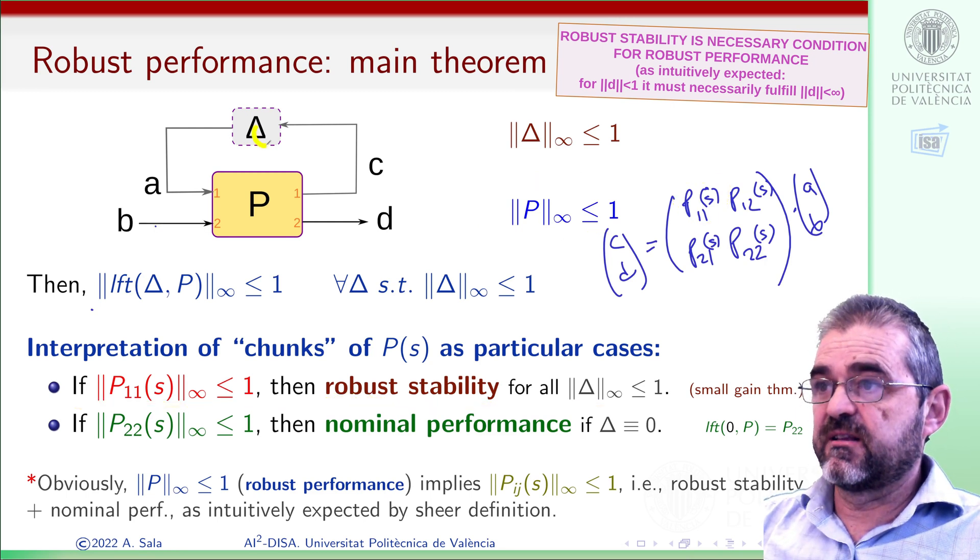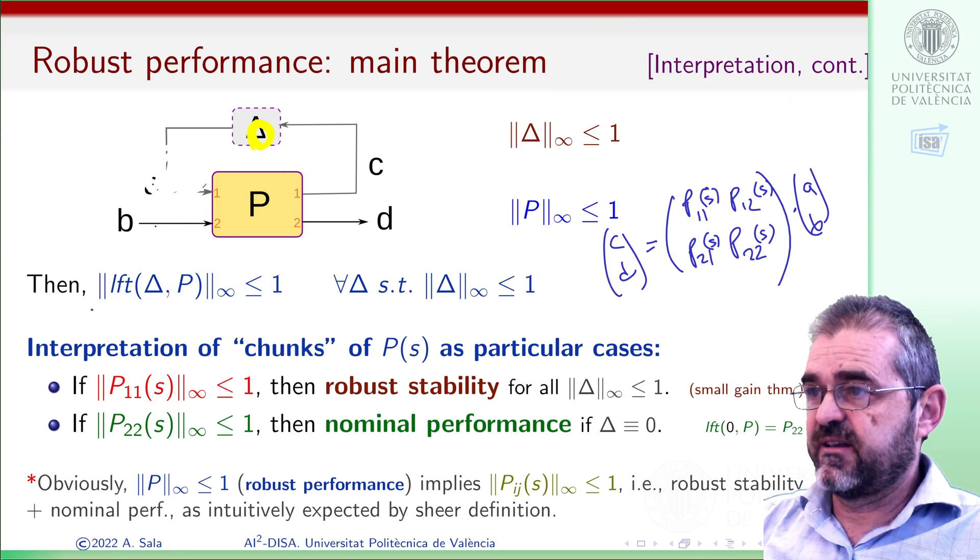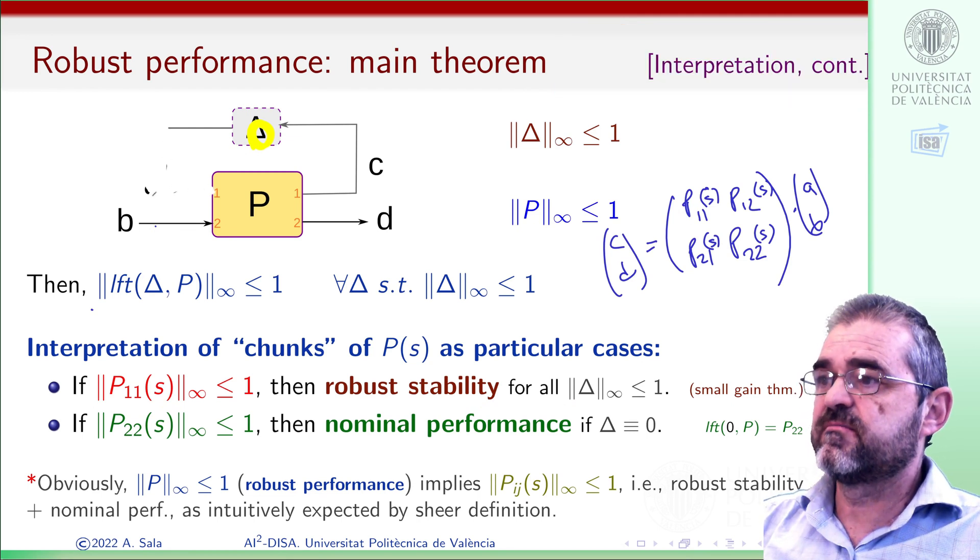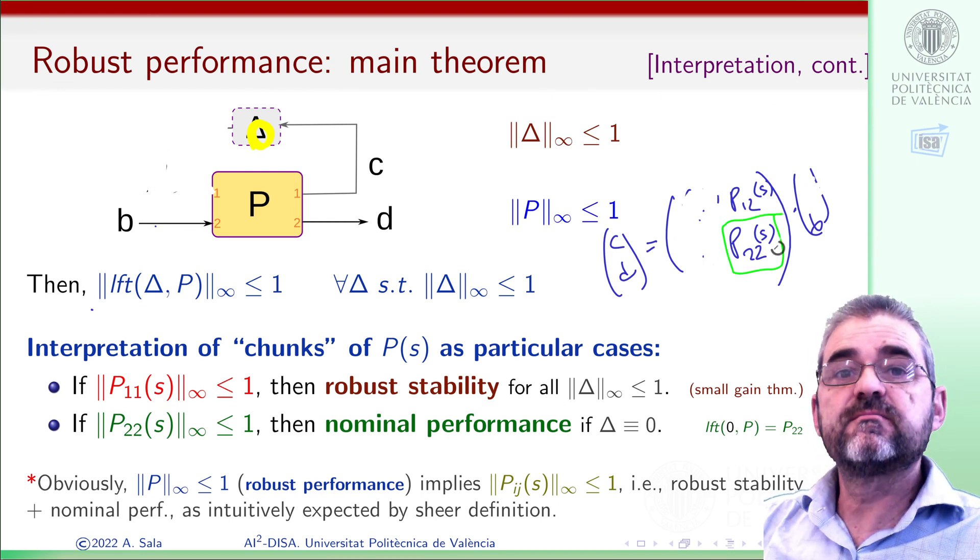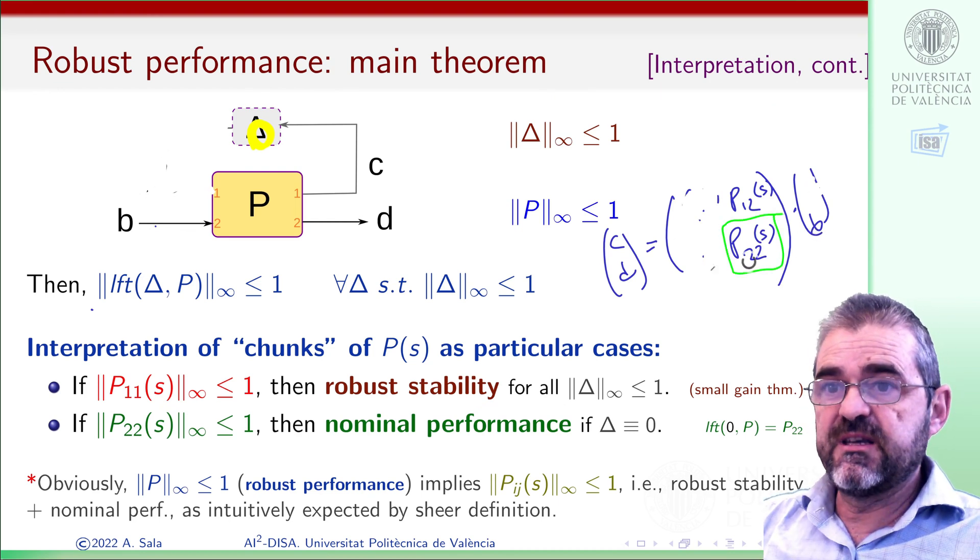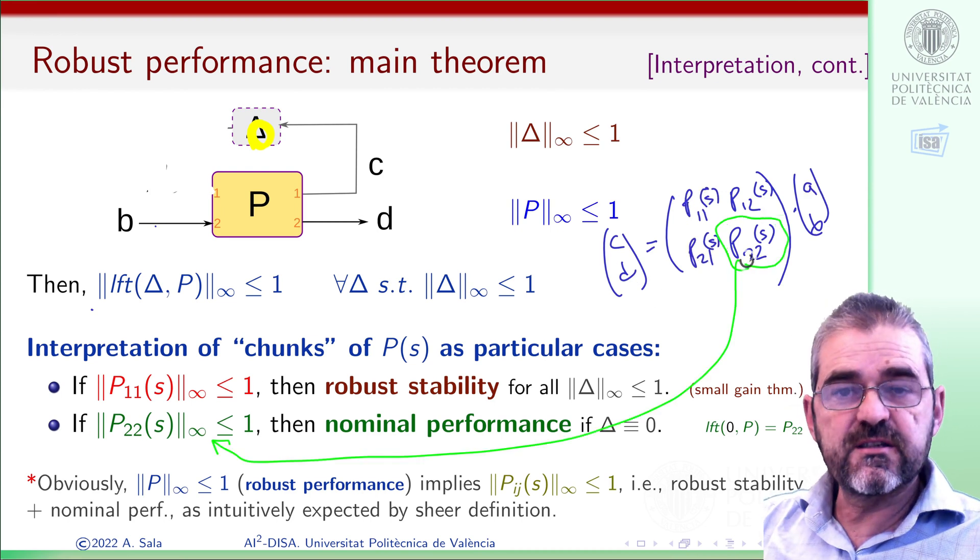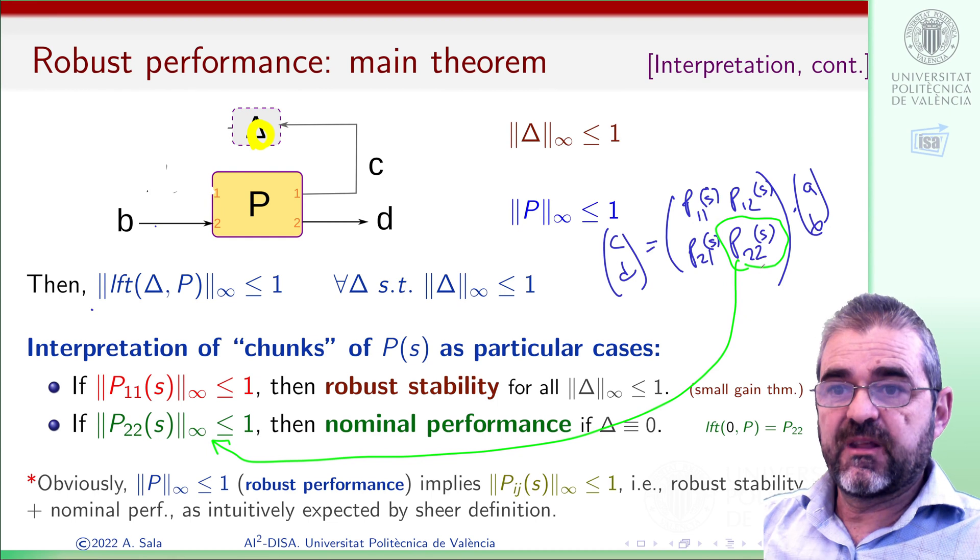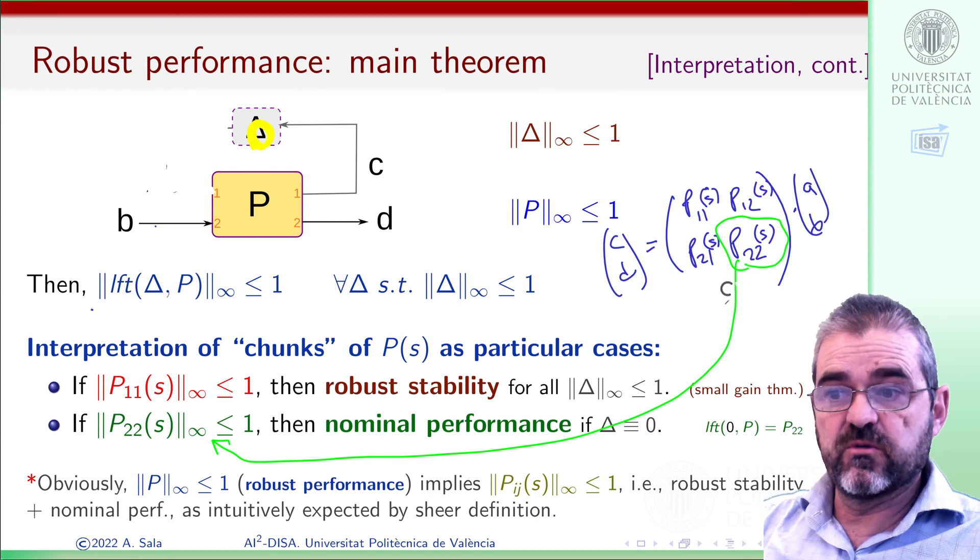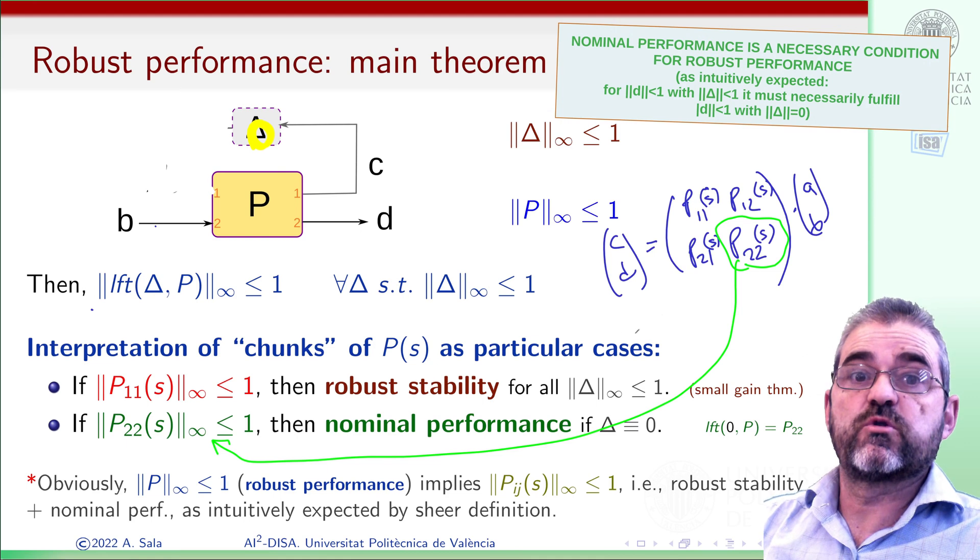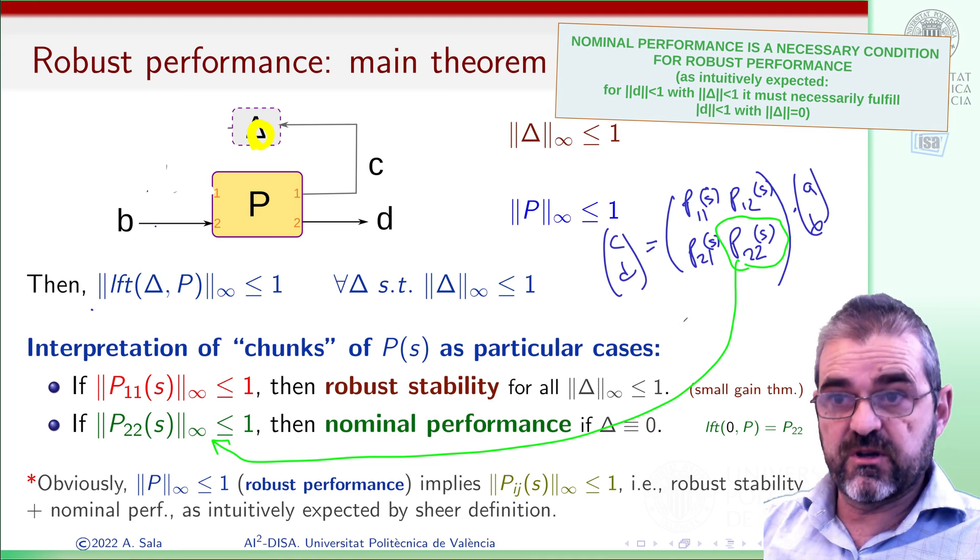Also, if delta were 0, then we would not have this A input. So when there is no uncertainty, the relationship between B and D is just P22. So requiring this to be less than 1 amounts to say that we need performance when delta equals 0, so nominal performance. And of course, nominal performance is a necessary condition for robust performance.